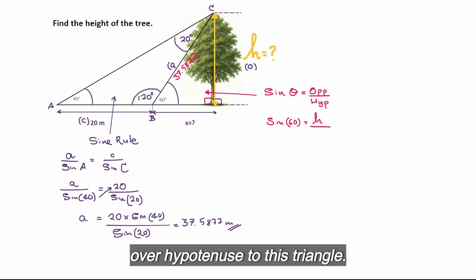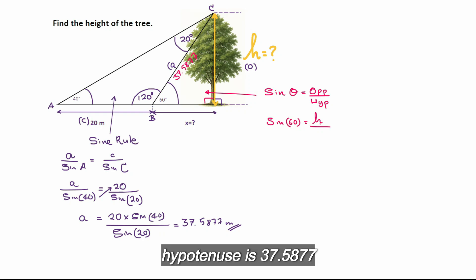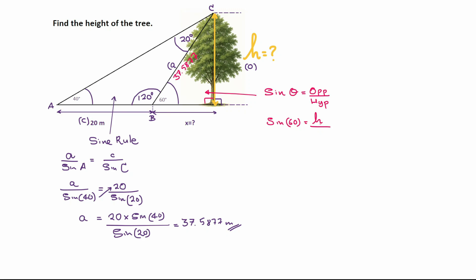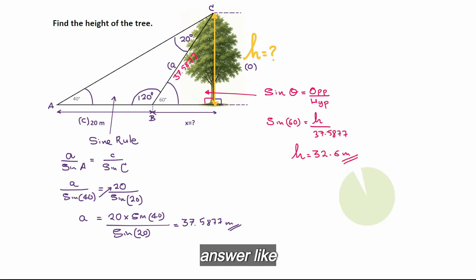Now we can use sin theta equals opposite over hypotenuse for this triangle: sin 60 equals h over 37.5877, and that again gives me exactly the same answer as before.